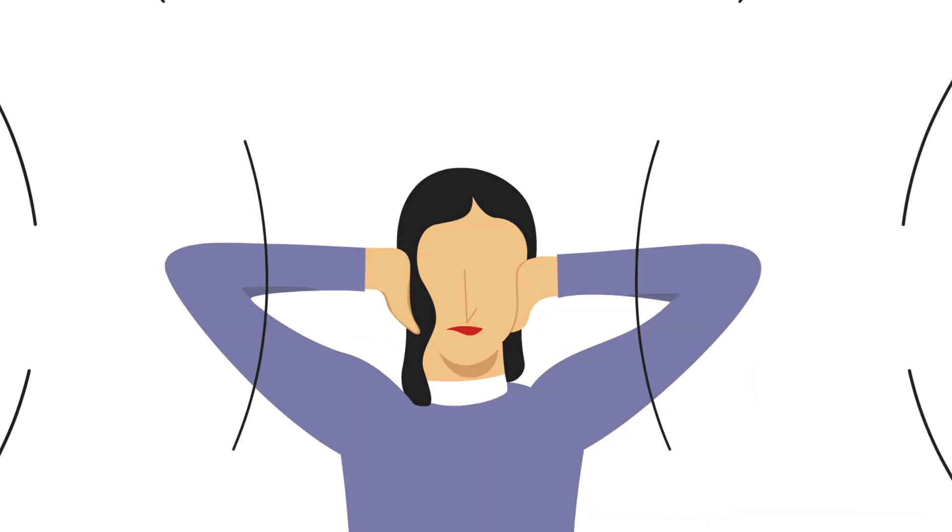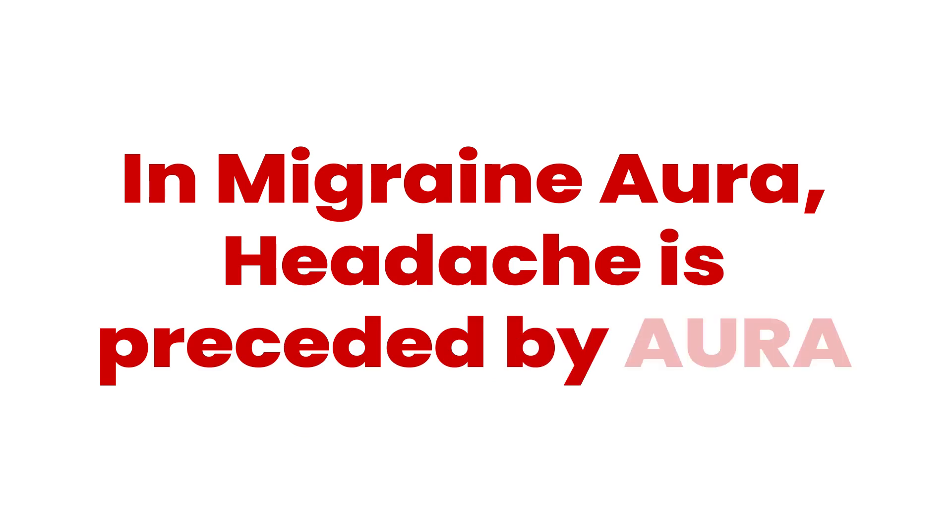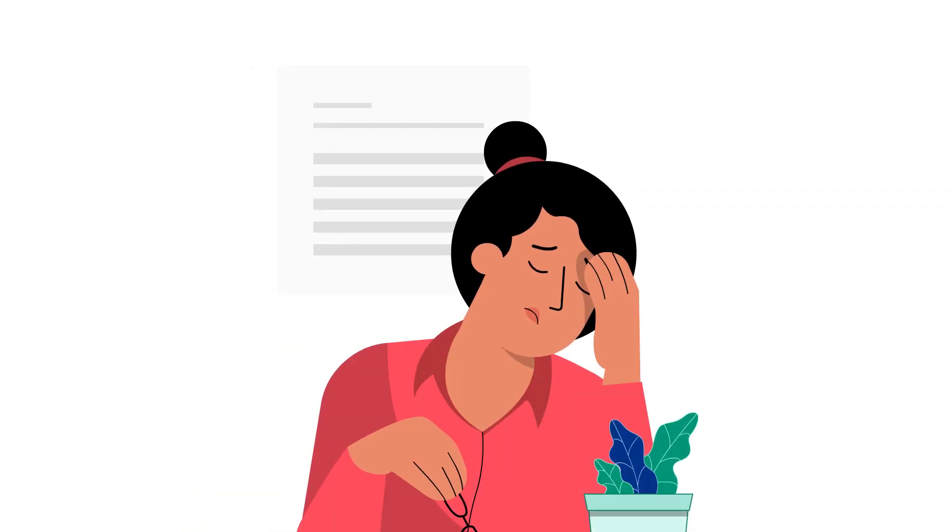In migraine aura, headache is preceded by aura. Patients experience symptoms of aura before the headache, and these are due to the change in charge across the cell membrane that leads to spreading changes in brain activity and blood flow across the brain.